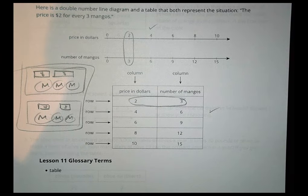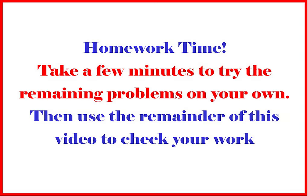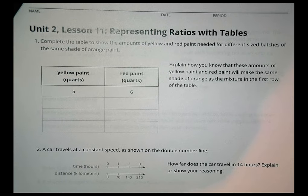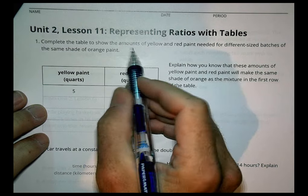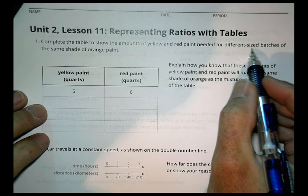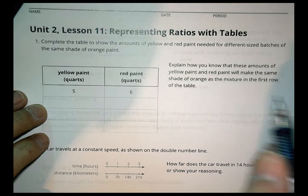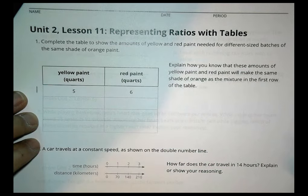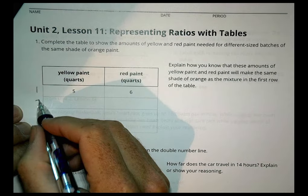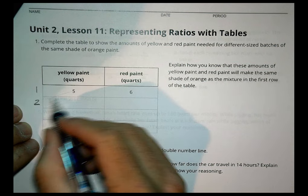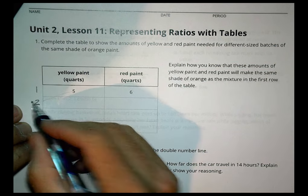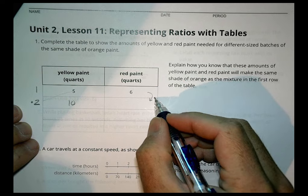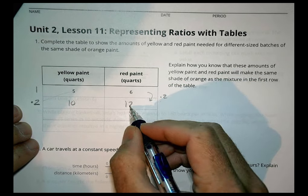That's it for today's lesson. Here's our homework for Lesson 11. We need to complete the table to show the amounts of yellow and red paint needed for different sized batches of the same shade of orange paint. There's nothing given here besides what it takes to make one batch. If I wanted to make two batches, I would double it — five times two becomes ten and six times two becomes twelve.